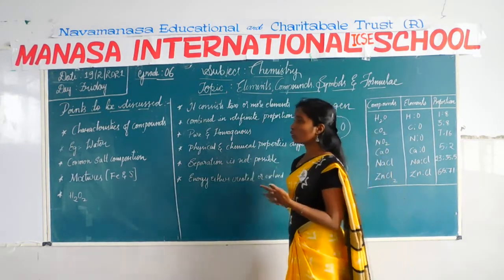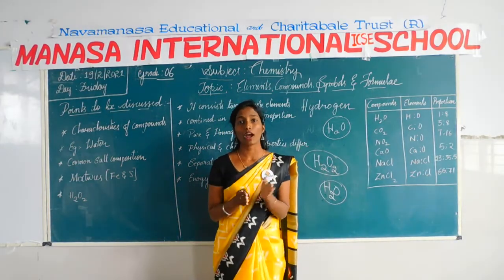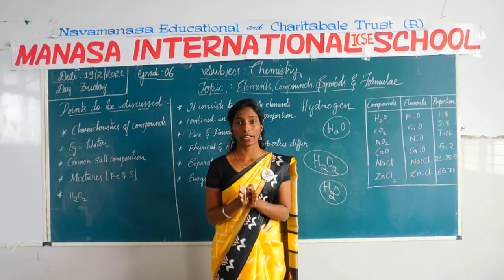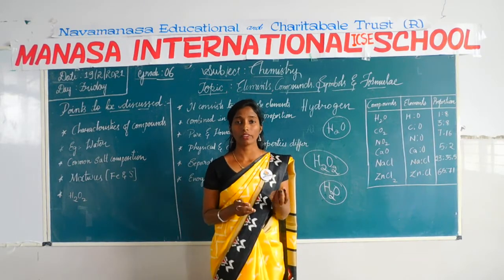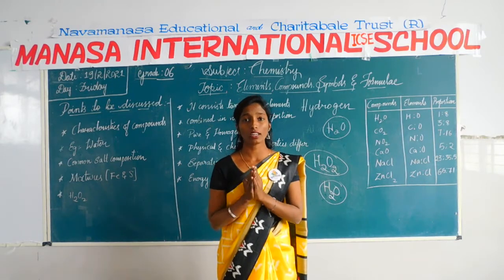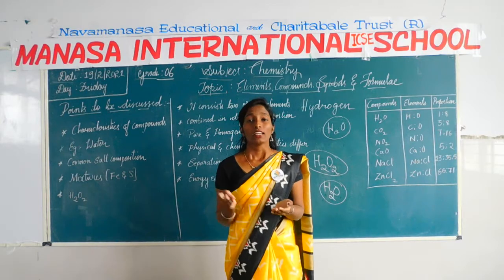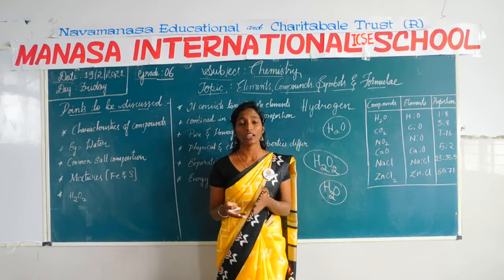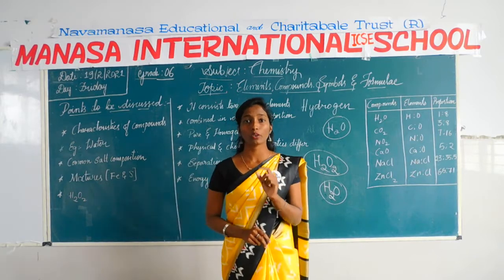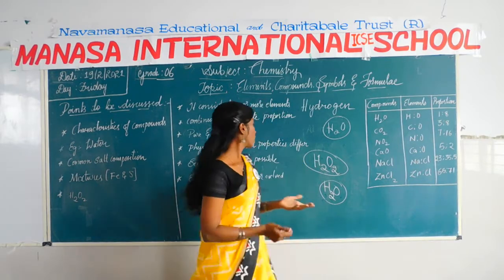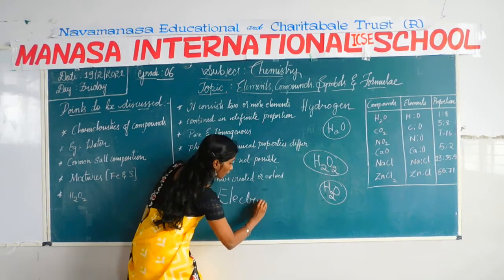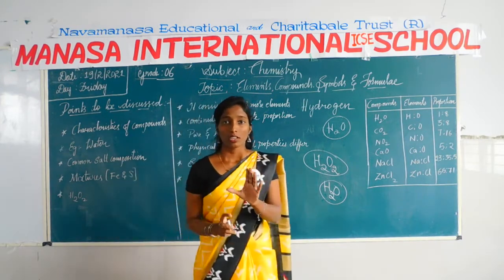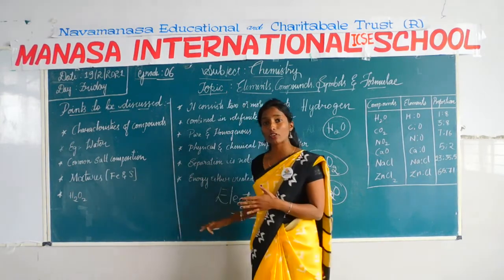The fifth characteristic: separation of components is not possible by simple means. If you take water and mix alcohol or milk into it, you cannot separate them easily. Even if you apply separation methods like crystallization or freezing, there are many methods, but you still cannot separate them easily. You can separate the components only through the electrolysis process. Electrolysis — you will learn completely about this in your higher classes, but for this class I will just give the definition.